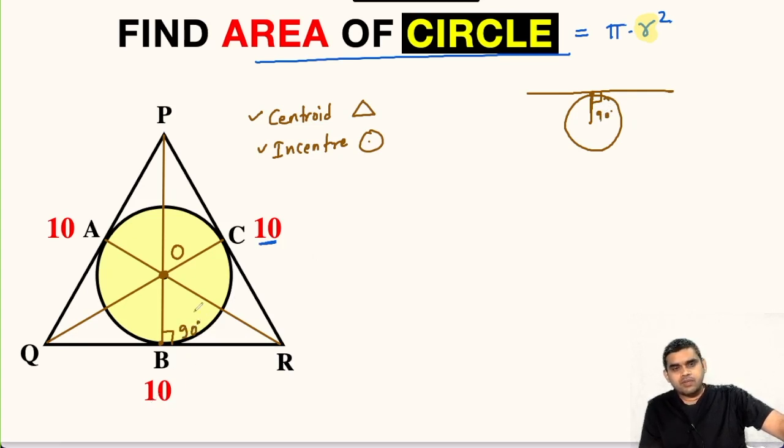Now another property: it is an equilateral triangle and we have this OB perpendicular to QR. Then by symmetry this will be equal to this. So we can divide it into two parts. So this will be 5 units and this will also be 5 units.